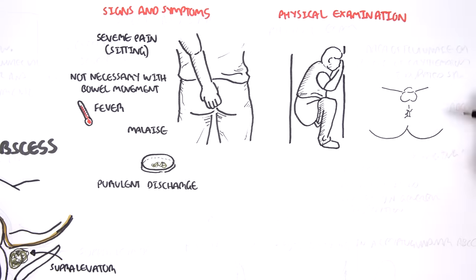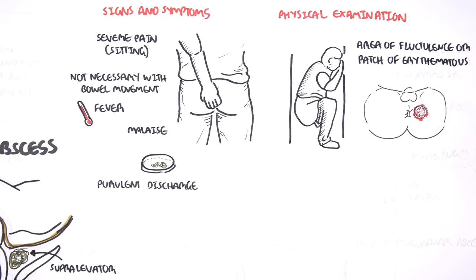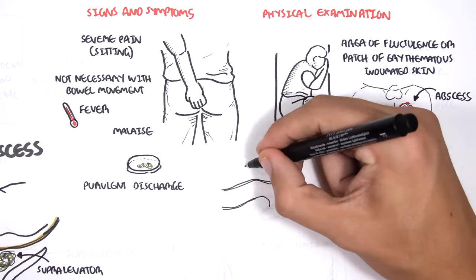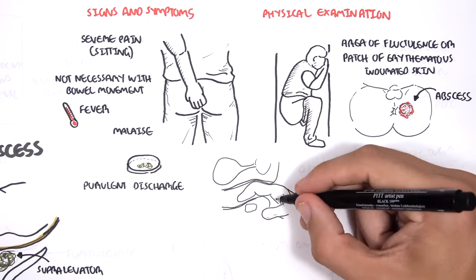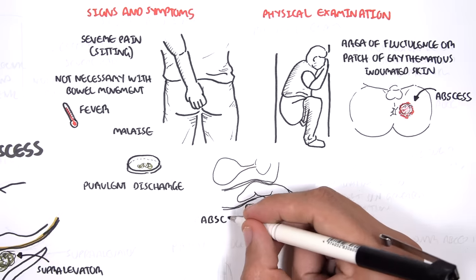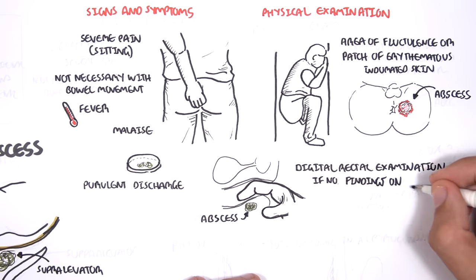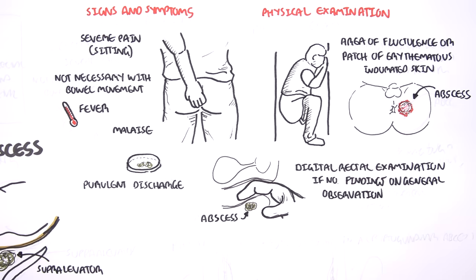And what is seen is potentially a fluctuance or patch of erythematous indurated skin within the buttock area. And here, as shown, the abscess is on the left. A digital rectal examination may also be performed to examine for any deeper abscess, and is done if there is suspicion of this following a general observation.